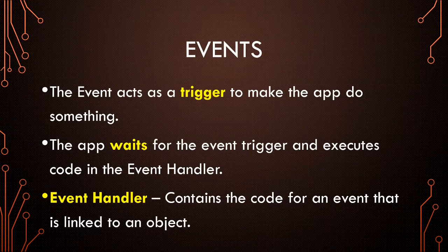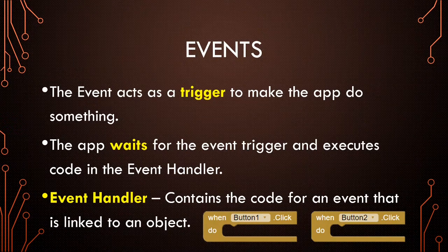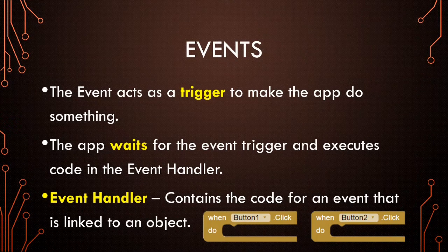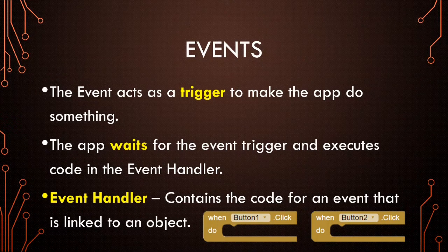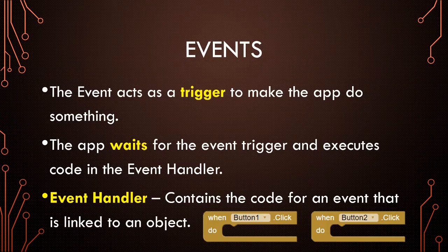In other words, I can have two objects on the screen, two buttons, button one and button two. They can both have a click event. It's the same event, but they're attached to different objects. If I click button one, only the code in the button one click event handler will run, not the stuff that's in the button two click event handler.